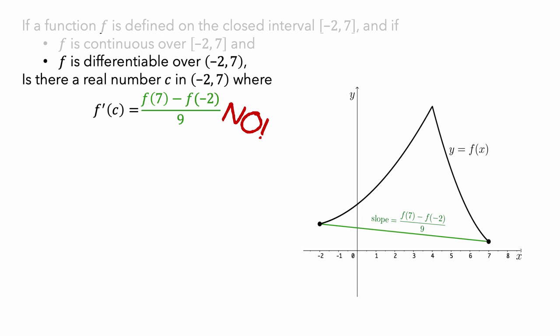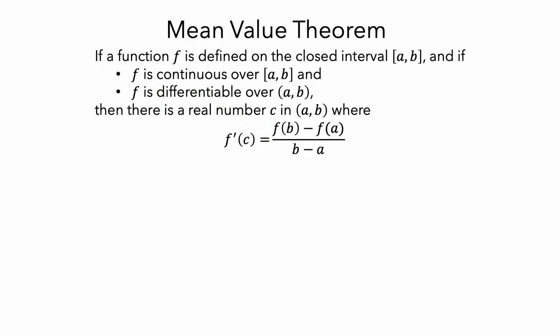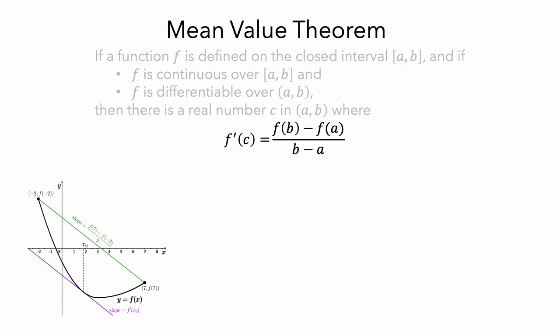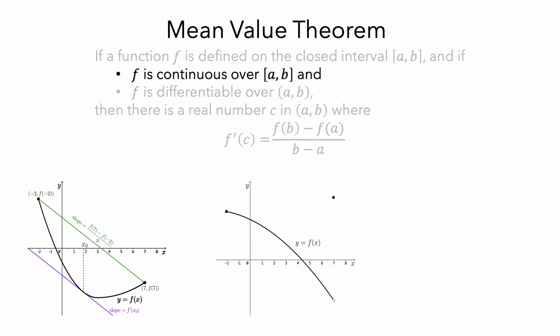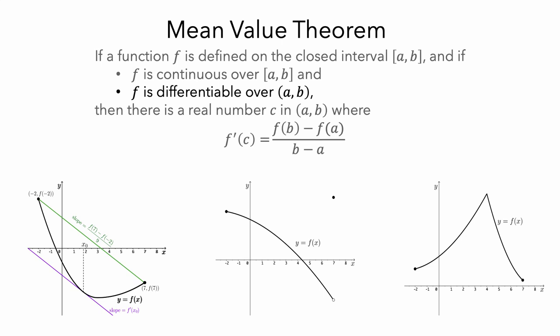To summarize what we've seen: we looked at the statement of the mean value theorem. We looked at an example to see what it meant for there to be a point c so that the instantaneous rate of change at c was equal to the average rate of change over the interval. Then we saw another example to see why the theorem only works for functions that are continuous on the entire interval. And we looked at a third example to see why the theorem only works for functions that are differentiable on the interval.